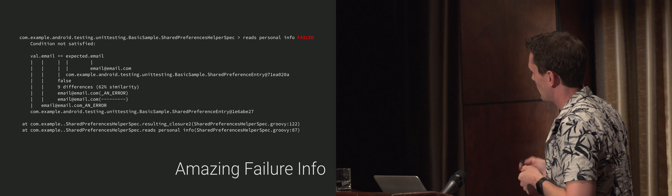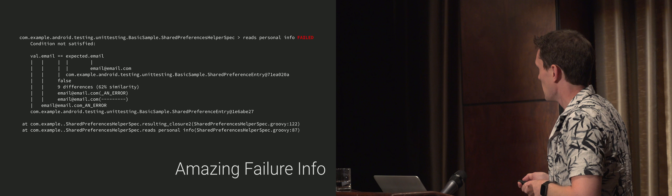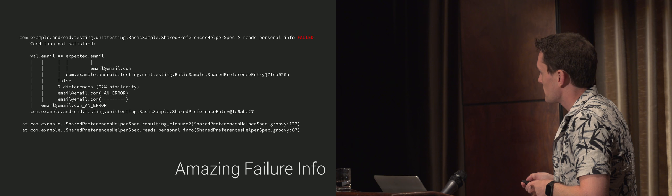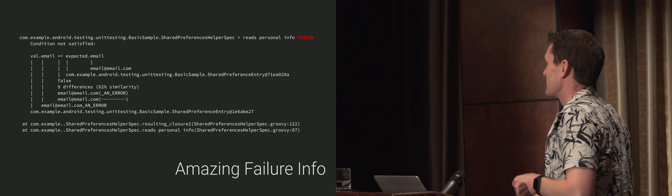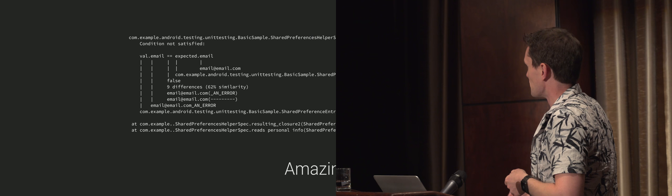This is one thing I absolutely love about this — the failure messages on this thing are so detailed. It will give you the expression that failed, the verification. And it will break down every last little bit of the thing. So it will tell you: oh, this is this object, this value was this, this is false, it did not equal, and there were nine differences. And if you really care, it was a 62% similarity. This fantastic breakdown means that the moment you get a failure, you generally know exactly what happened, which is invaluable.